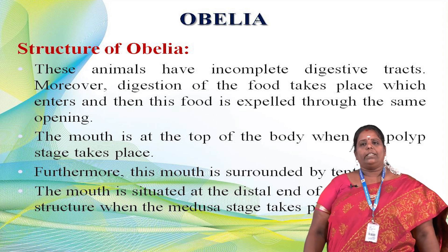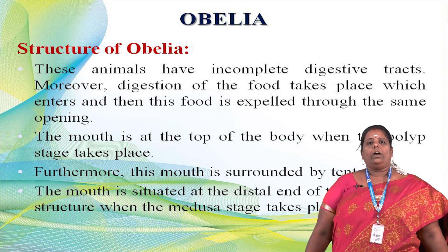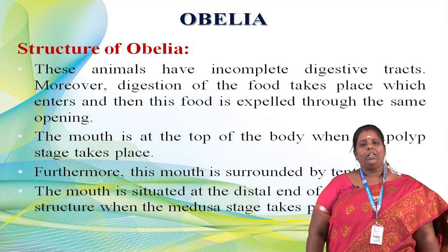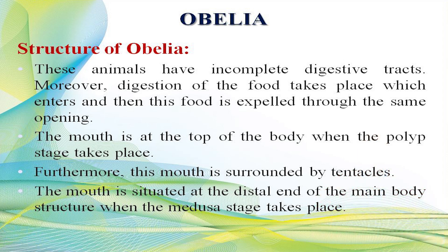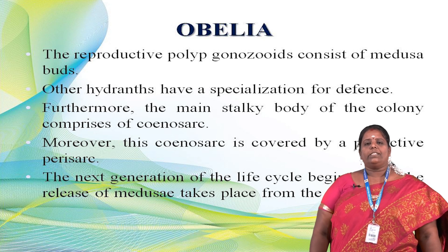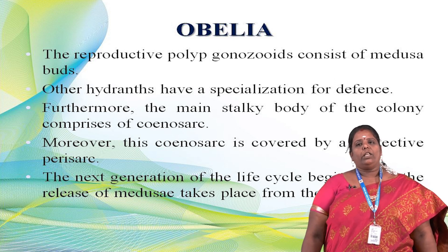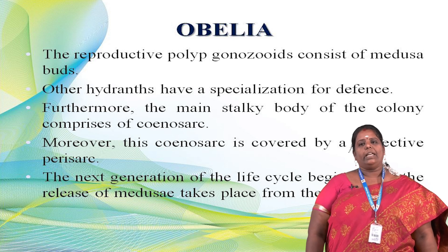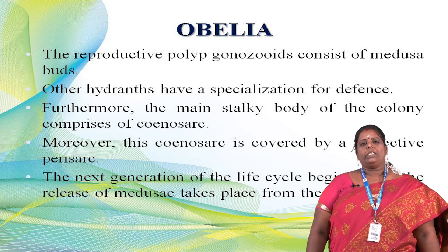The mouth occurs at the top of the body — that is the manubrium. The polyp also has a manubrium or mouth. The mouth is surrounded by many tentacles used to capture prey. The mouth is situated at the distal end of the main body. In the medusa stage, the reproductive polyp gonozooid consists of medusa buds. The main stalk-like body of the colony is the coenosarcum, which is covered by a protective perisarc.